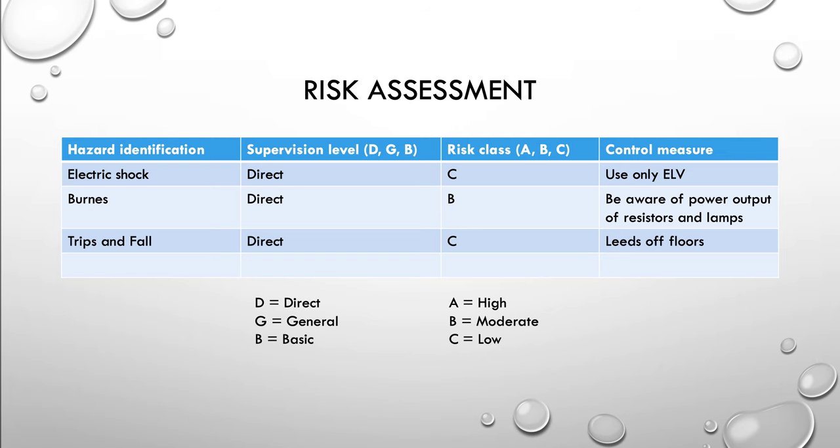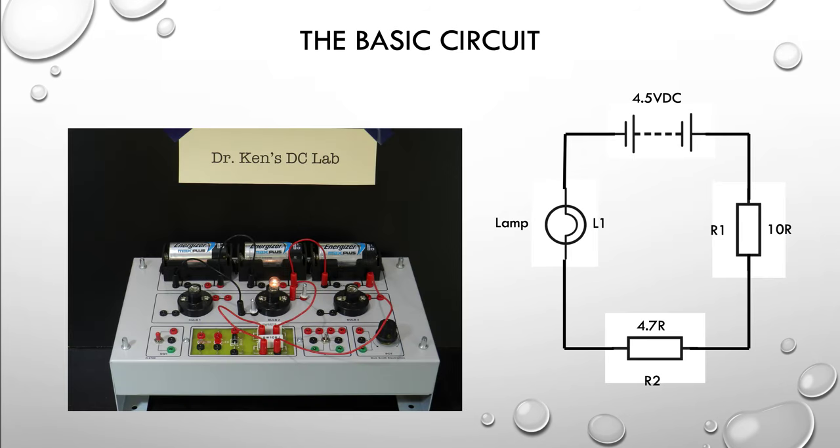Here's my basic circuit. We're going to connect it up with a circuit diagram on the right-hand side and the actual connection you can see there in the photo on the left-hand side. Basically, I've got a 10 ohm resistor, a 4.7 ohm resistor, and a lamp in series with a 4.5 volt battery.